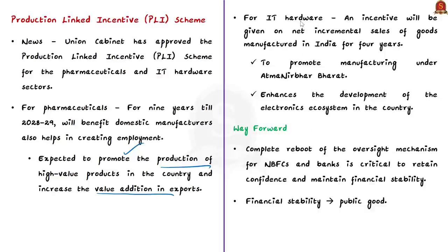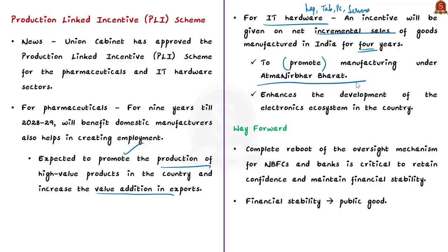Coming to the PLI scheme for IT hardware such as laptops, tablets, all-in-one PCs and servers — an incentive will be given on net incremental sales of goods manufactured in India for a period of four years. This is an important segment to promote manufacturing under Aatmanirbhar Bharat, as there is huge import reliance for these items at present. It also enhances the development of the electronics ecosystem in the country. Both schemes promote investment in these sectors and enhance employment opportunities.